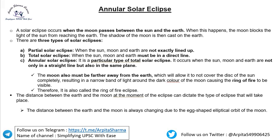When the moon passes between the sun and the earth, the moon blocks the light of the sun from reaching the earth. The shadow of the moon is then cast on the earth, and that is why we witness the solar eclipse.